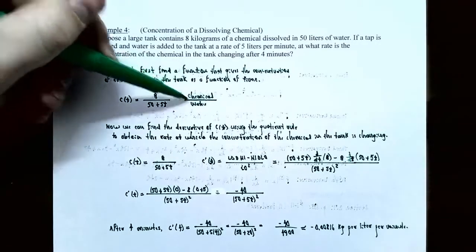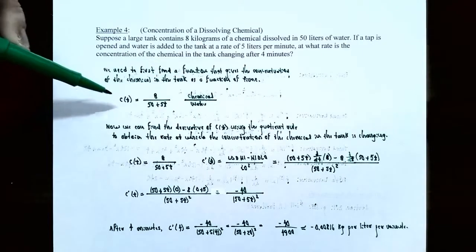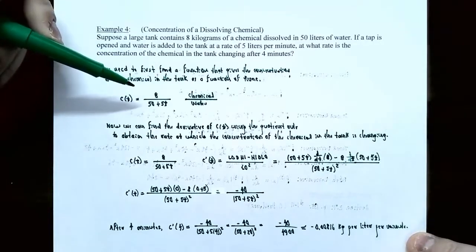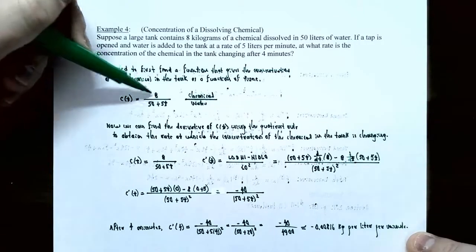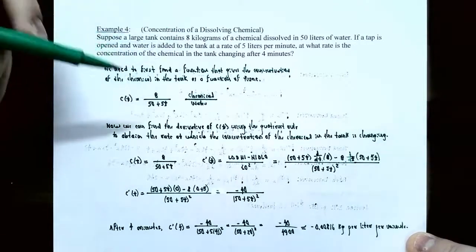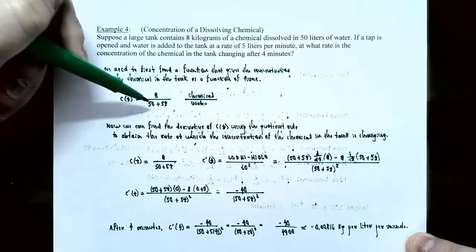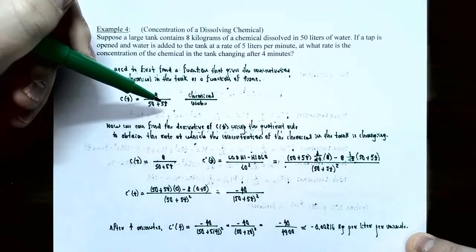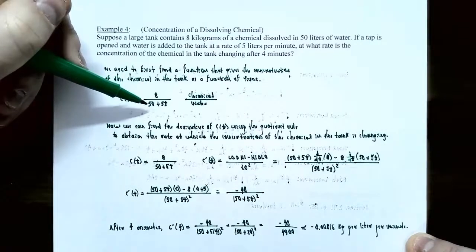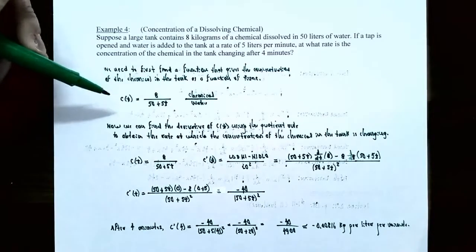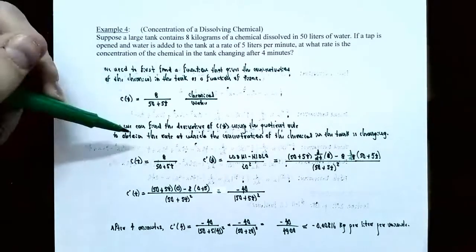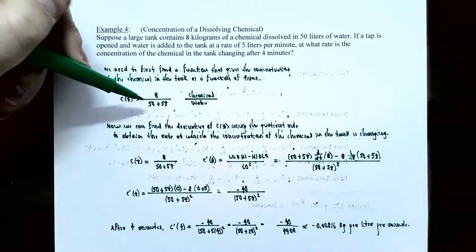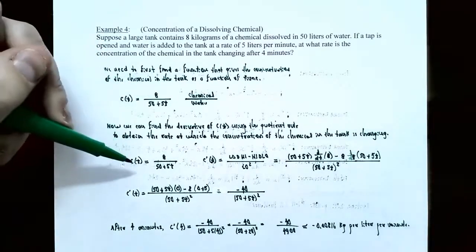The concentration is the amount of chemical divided by the amount of water. The chemical stays at 8 kg, but the amount of water changes. Originally there are 50 liters, and 5 liters are added each minute, so after t minutes you have 50 plus 5t liters. The concentration function is c of t equals 8 divided by 50 plus 5t. Since this is a fraction of two different functions, we use the quotient rule to find c prime of t.